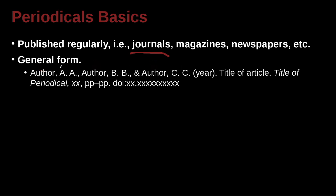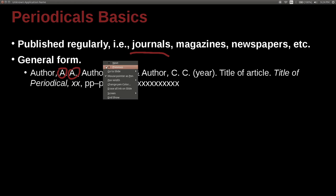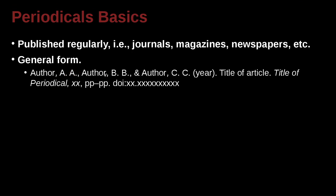You can see here that the author's name is the surname, but then for the first name and the middle name, we use the first letter only — we don't use the whole name, just the initial, capitalized. Also note there's a space there. So it's first name period space, middle name period space, and then a comma, and then the next author, and before the last author, if there's more than one, you're going to have the ampersand.